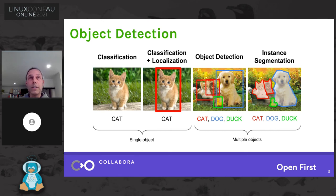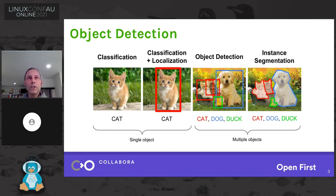One interesting thing to note about object detection: up until about 20 years ago, it was generally believed that it would take a very long time — maybe 100 years — for a computer to match a human at object detection, because our visual system is very good and has been evolving for hundreds of millions of years. And yet, as of around five years ago, we now have computer systems that can beat the average human at detecting objects. So we've moved very fast in a very short period of time.